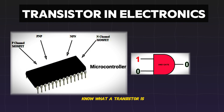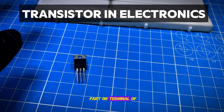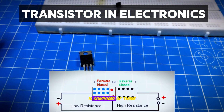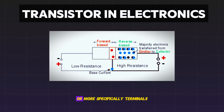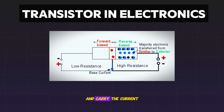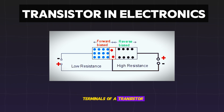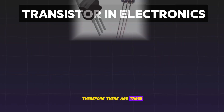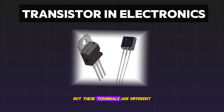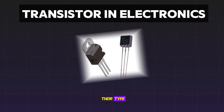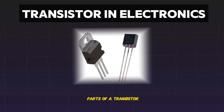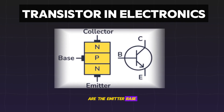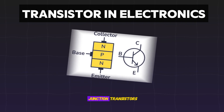Now that you know what a transistor is, let's talk about the parts or terminals of a transistor. A typical transistor is composed of three layers of semiconductor materials, or more specifically, terminals that help to make a connection to an external circuit and carry the current. A voltage or current applied to any one pair of terminals controls the current through the other pair. The most common parts of a transistor are the emitter, base, and collector, which is for bipolar junction transistors.